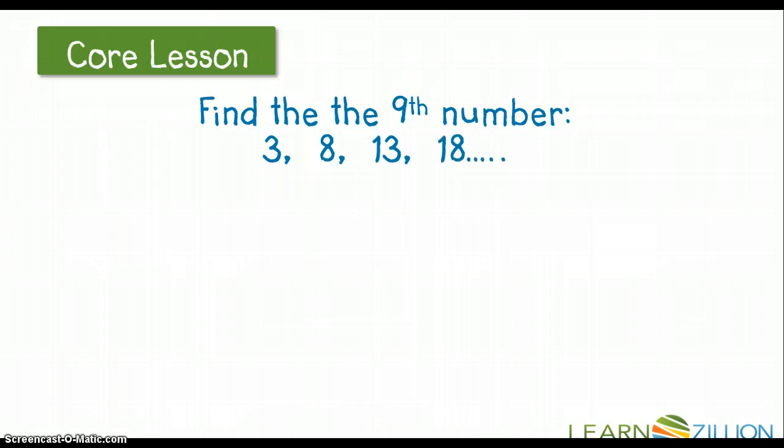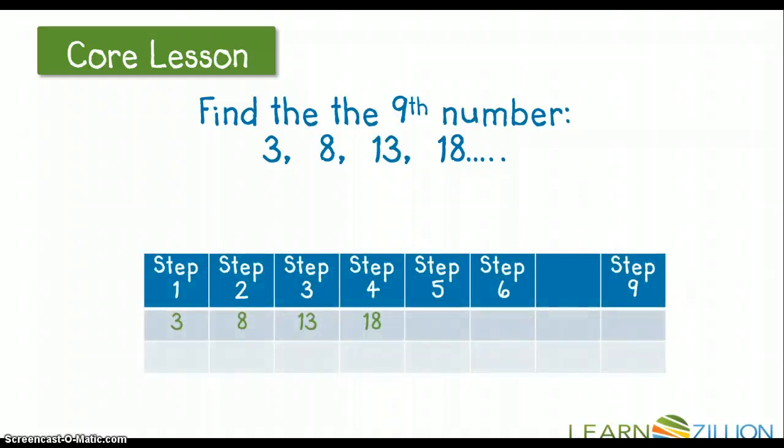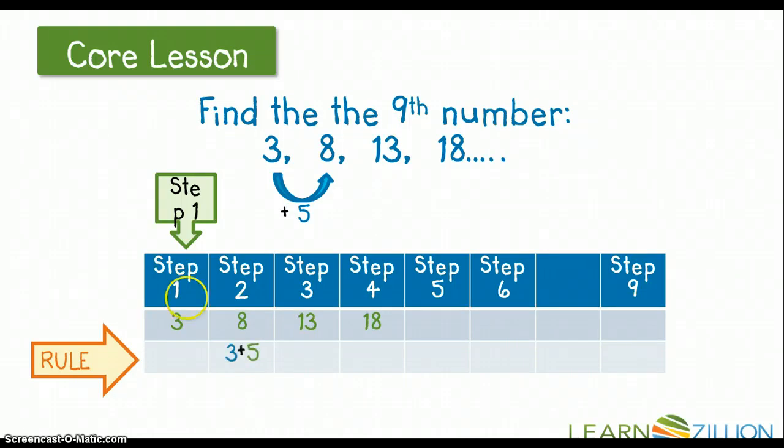So you want to find the 9th number for this problem. So 3, 8, 13, and 18 are the numbers that we are given. So we're going to plug those into our table here. And I know that step 1 is 3. And it looks like I'm adding 5 because my numbers are getting up. I either have to multiply or add. So I'm going to choose add here. So 3 plus 5 is 8. So I'm going to say that my rule is plus 5. And there it is. I plugged it into the rule part of my table. So then I go from 8 to 13. And I'm adding 5 again. 8 plus 5 is 13. And then I go from 13 to 18. And I know 13 plus 5 equals 18.